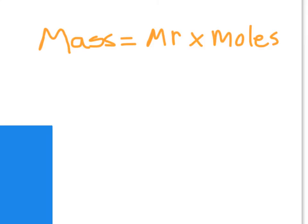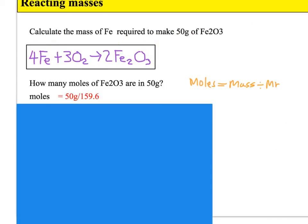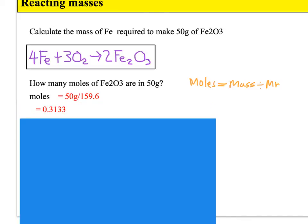So hopefully you remember the equation - you do need to memorize this one - that mass equals MR times moles. But we want to make moles the subject. So we divide both sides by the MR, so moles equals mass divided by MR. The mass is 50, and the MR of iron oxide is 159.6. So it's 50 divided by 159.6, gives us the moles, which comes out at 0.3133 moles.